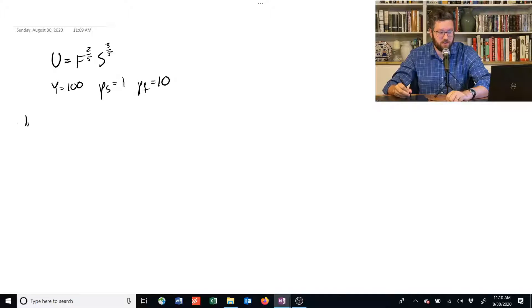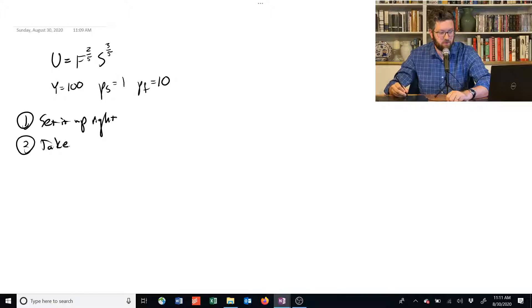Remember, to use the Lagrangian, we've got a four-step process. Number one, set it up right. Number two, take the first-order conditions with respect to each variable and the Lagrange multiplier. Step three, set them all equal to zero. And step four, solve the system.